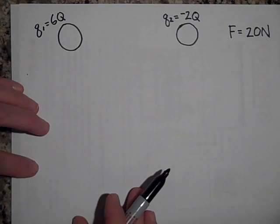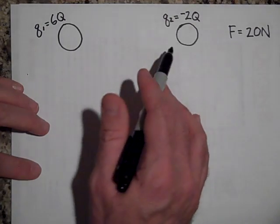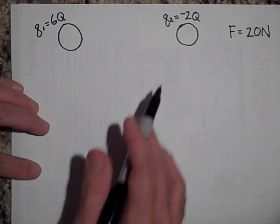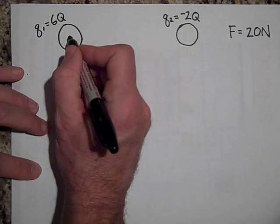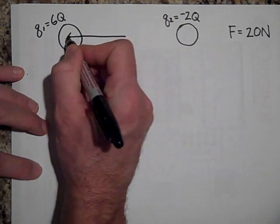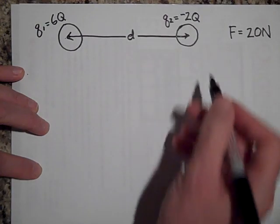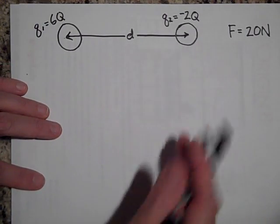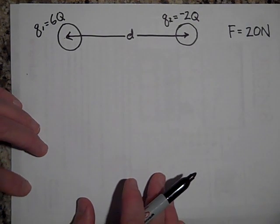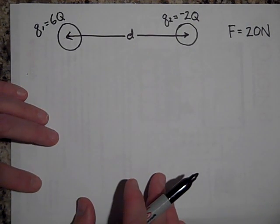So what would happen to this force if we doubled this charge? They're right now a distance D apart. What would happen if we doubled that charge right there? We made it negative 4Q. What would happen to the force? Go ahead and guess.